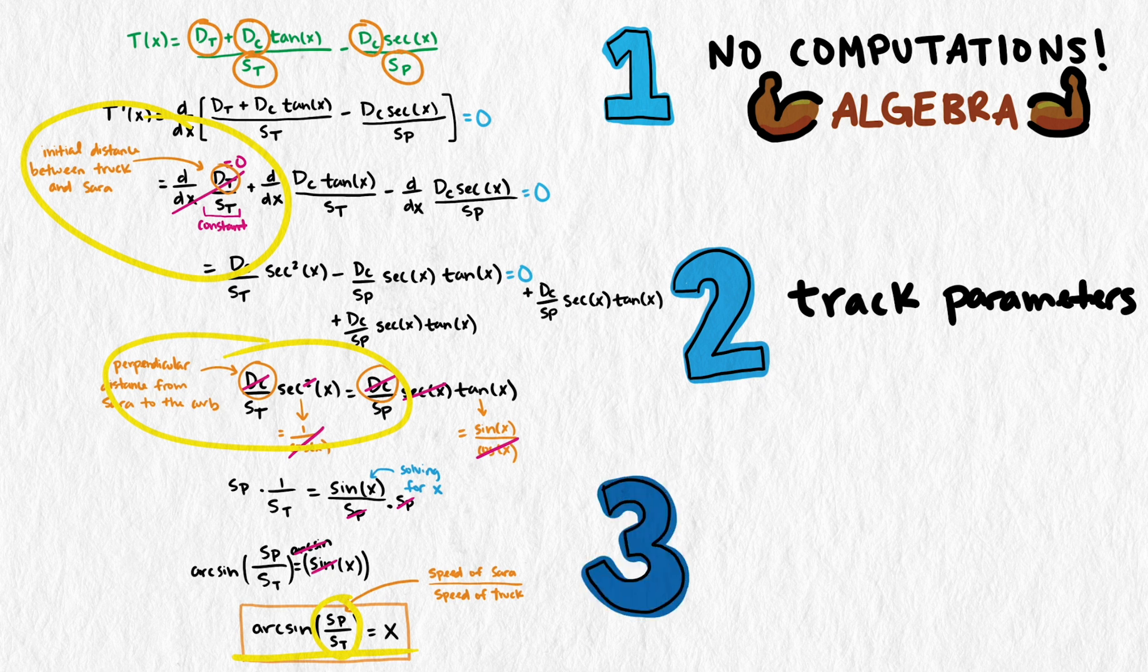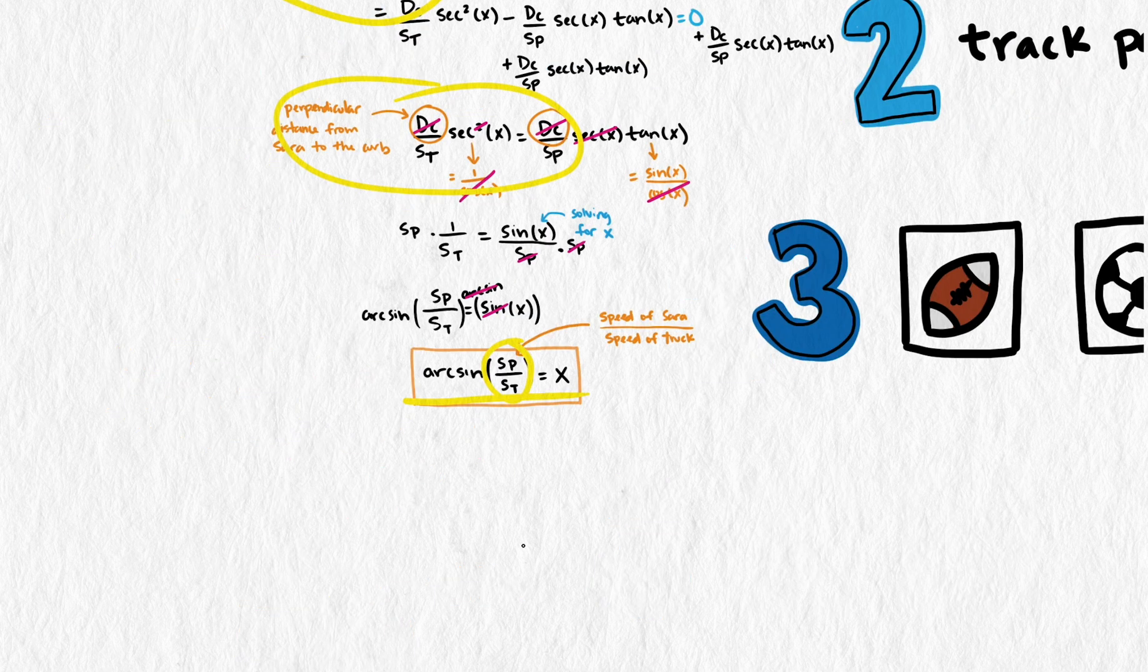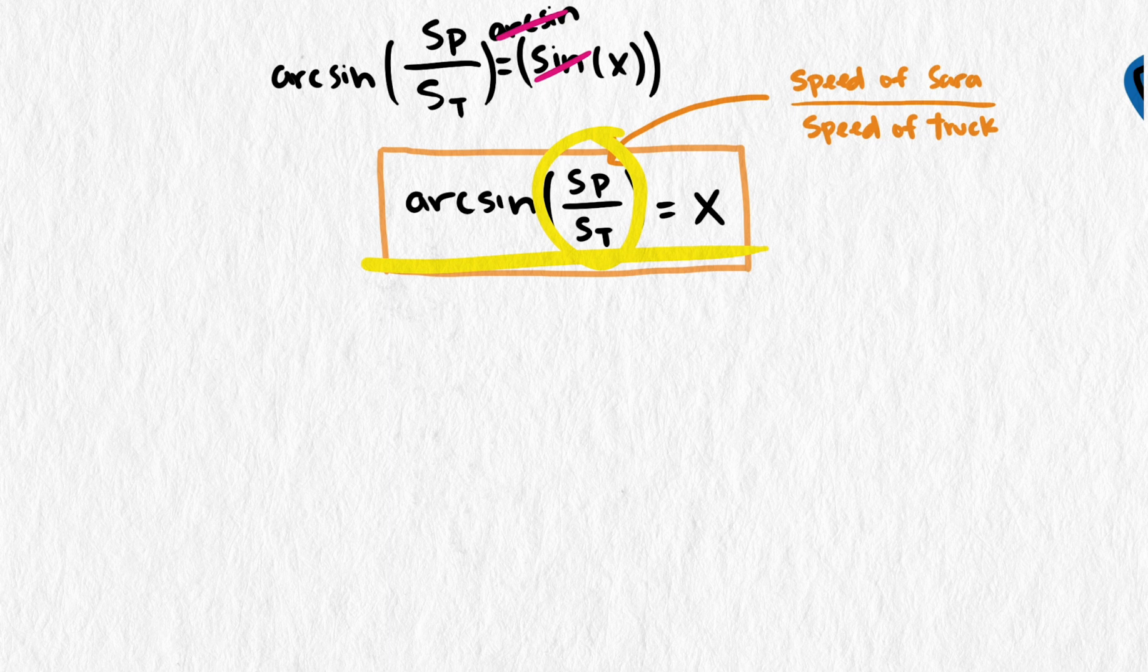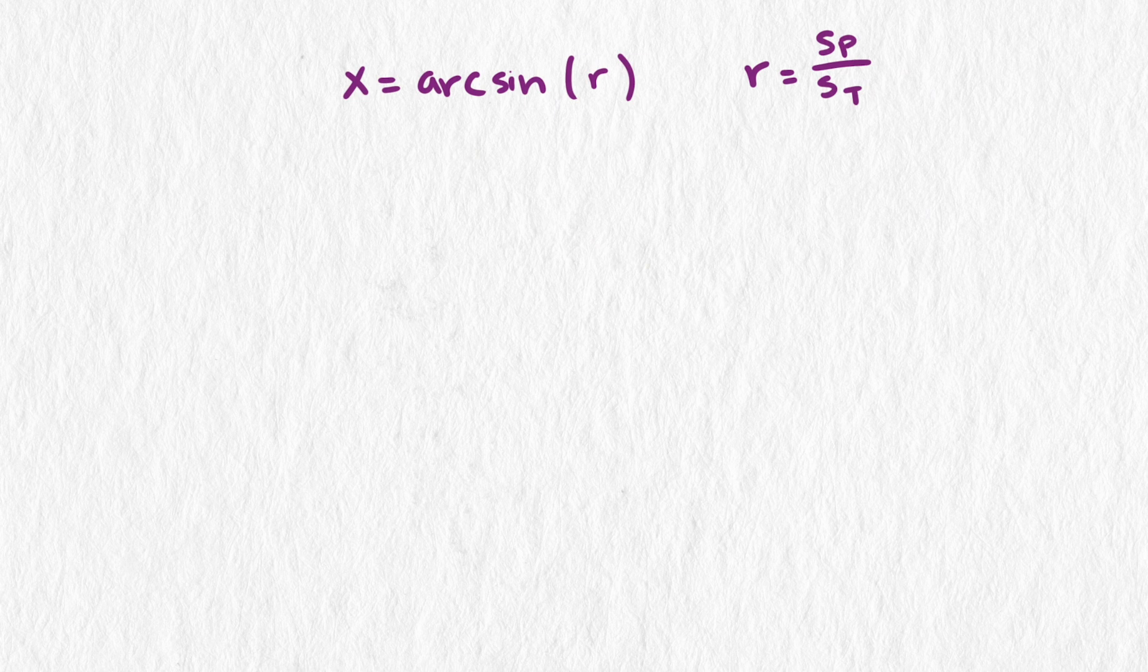Third, we now have a general formula for the optimal angle that we can apply to other situations without rehashing the work we did in the last video. Let's get back to our expression for the optimal angle. We can simplify the formula even further by replacing the ratio with one parameter, or variable. We can call it x equals arc sine of r. This is extremely helpful in understanding these escape or intercept situations.